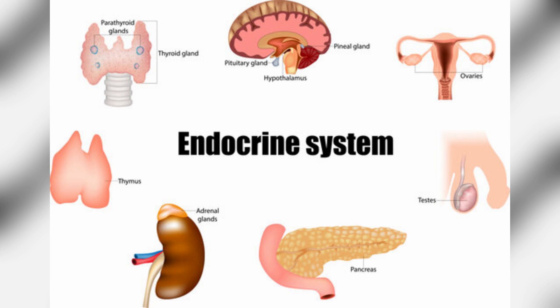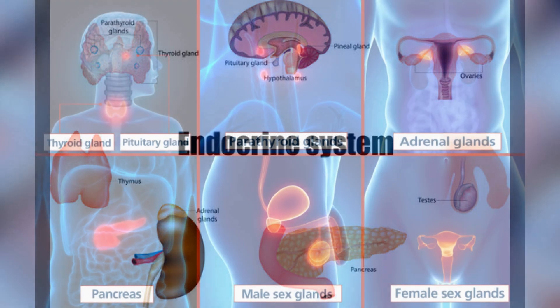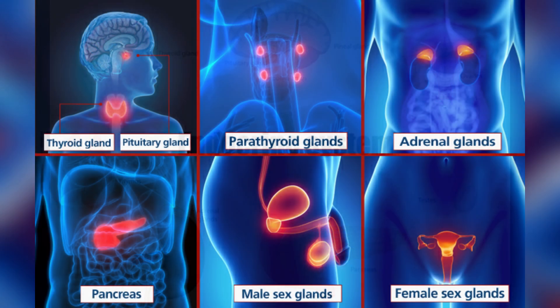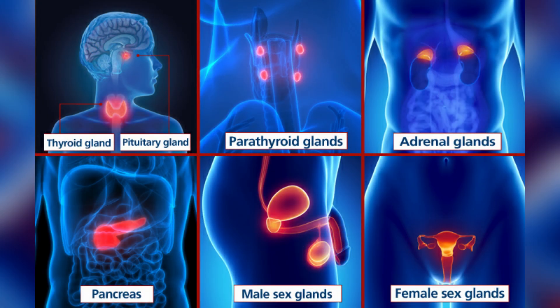These glands produce and secrete hormones into the bloodstream, traveling and affecting various target tissues in the body. Endocrine glands produce hormones that regulate the body's functions and development, metabolism, reproduction, growth, and sleep.